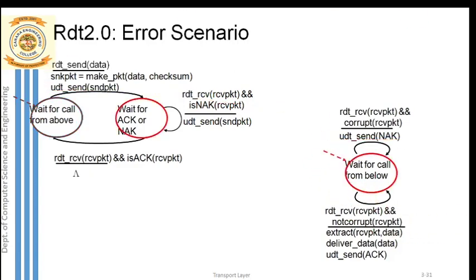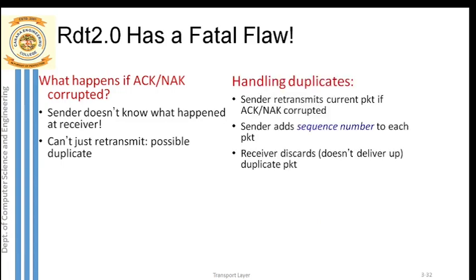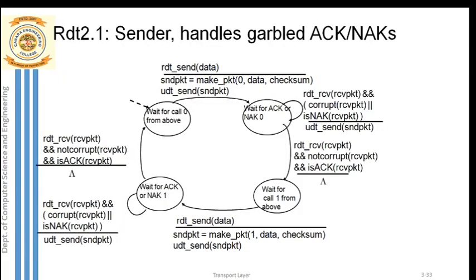The major drawback in RDT 2.0 is: what if the acknowledgement that the receiver is sending gets corrupted? After sending the data, the receiver will receive it and send back an acknowledgement to the sender. But what if the acknowledgement packet gets corrupted? There is no solution given by RDT 2.0 to deal with such a corrupted acknowledgement.